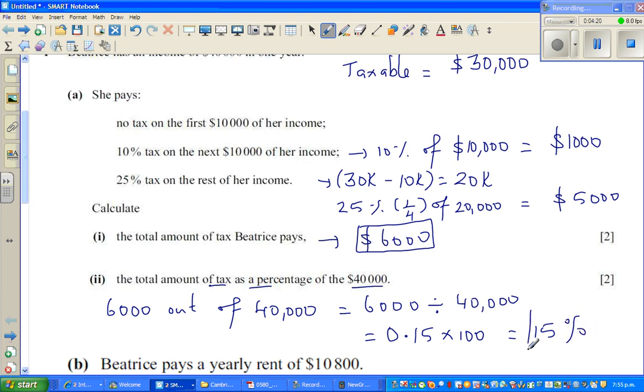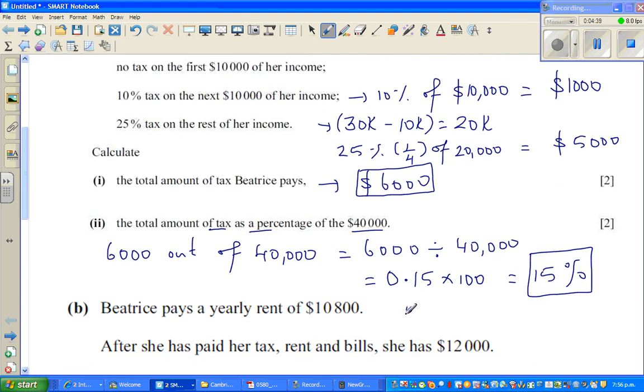Does it make sense? Let us check it. 10% of $40,000 is $4,000. And 5%, using logic, if 10% is $4,000, 5% would be $2,000. So this implies 15% is $6,000. So the answer does make sense.